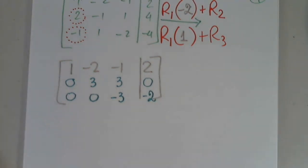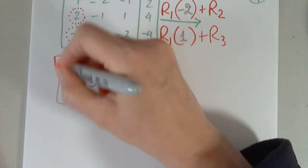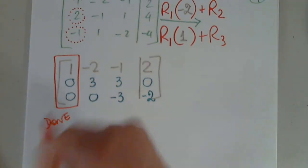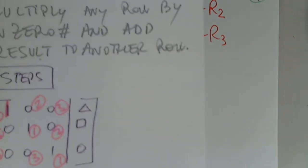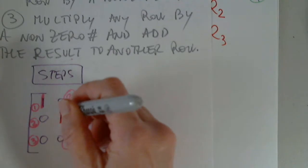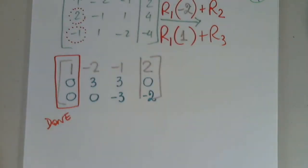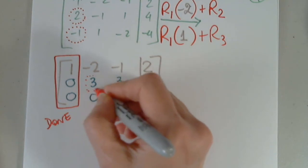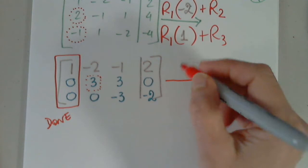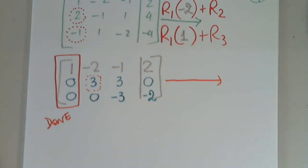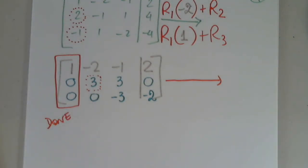What have we accomplished? A lot. Done. Where is my next step? Right here. I need to get this to be a one. I have to use row two now. What do I do? How do I get this to be a one? Is there any way — can I apply any of these three operations?